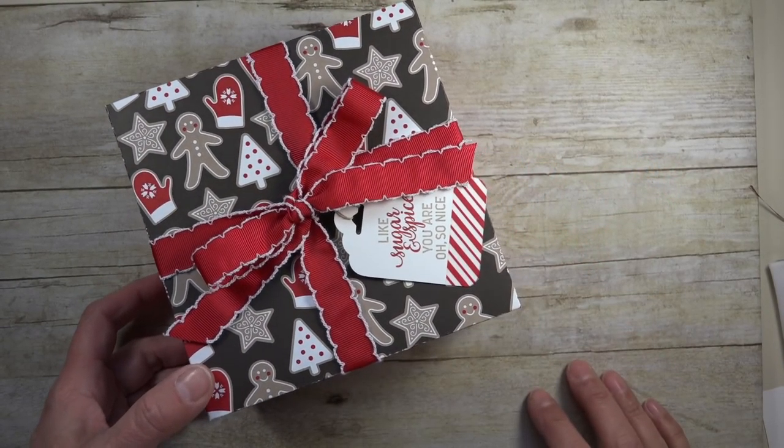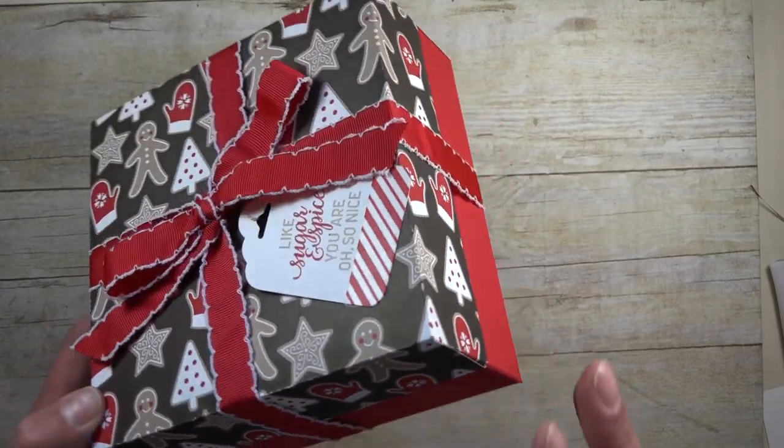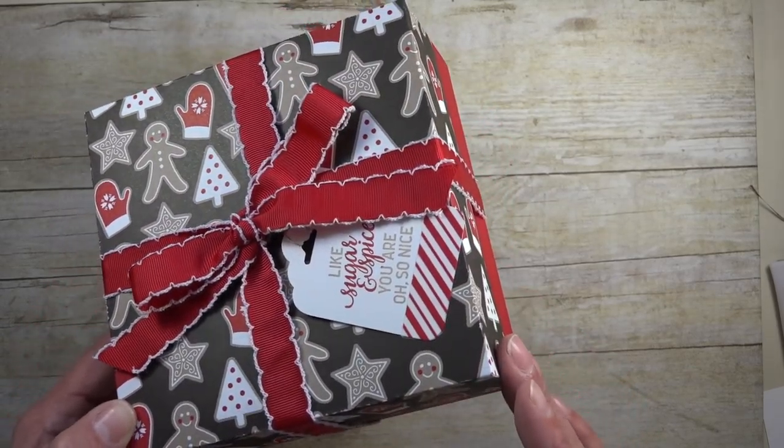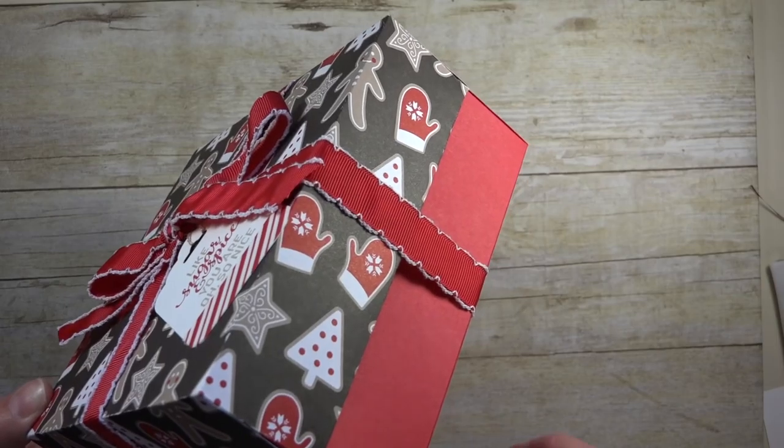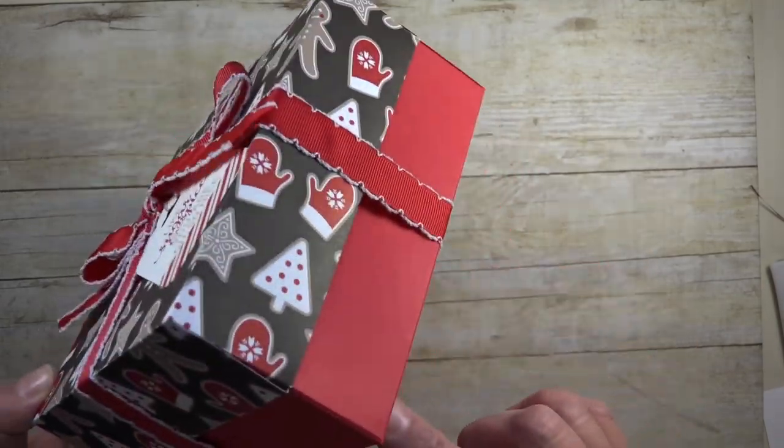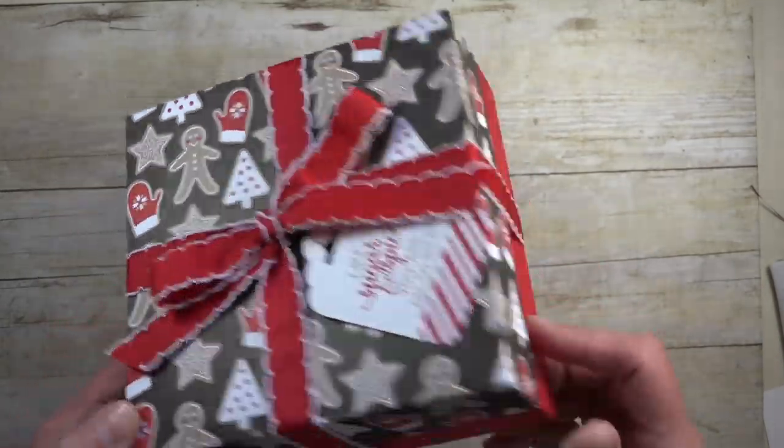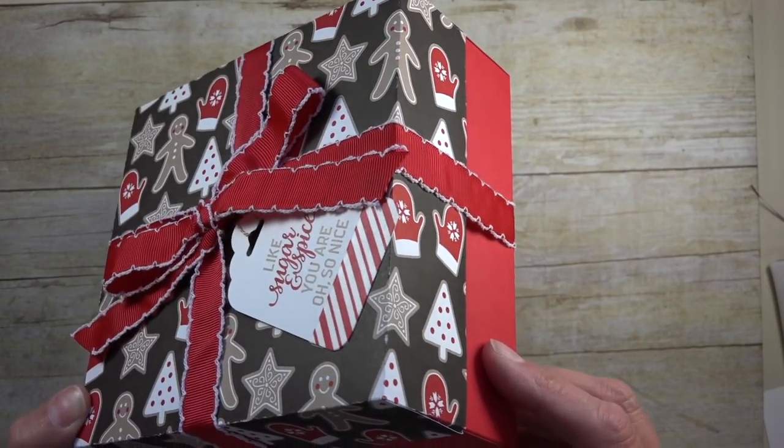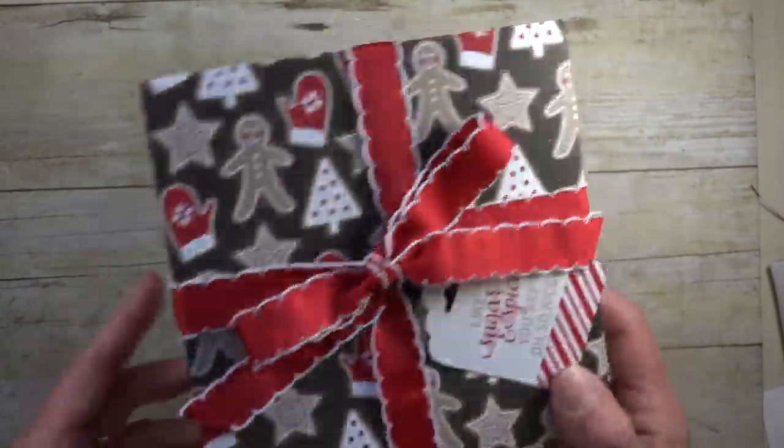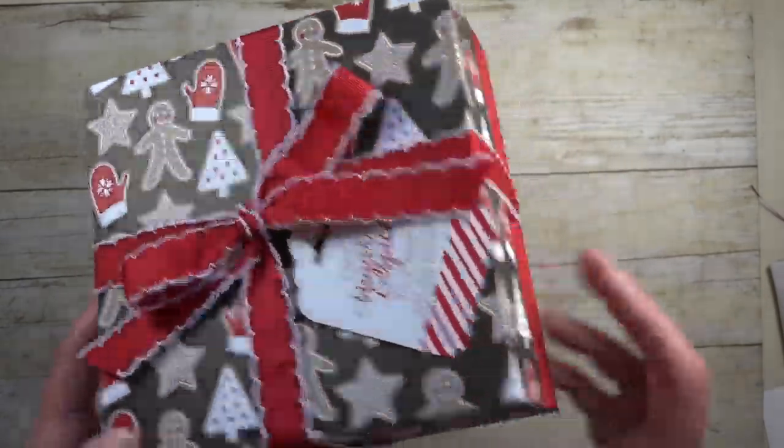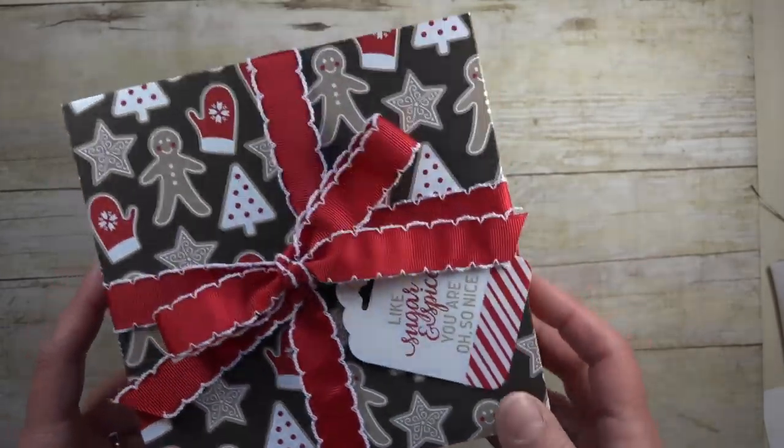Hi Stampers, Dianne Dimmes here with DDStamps.com. Today I'm going to show you how to make this box using the Candy Lane Christmas Designer Series Paper. It's a six by six square with a three inch depth, so it would fit quite a bit of gift in there. I'm thinking I might make these and put some baked cookies or candies for Christmas. So let me show you how I did it.